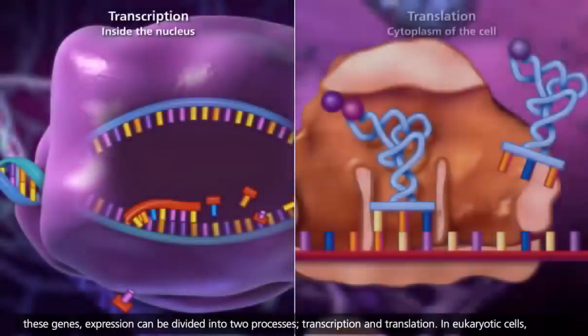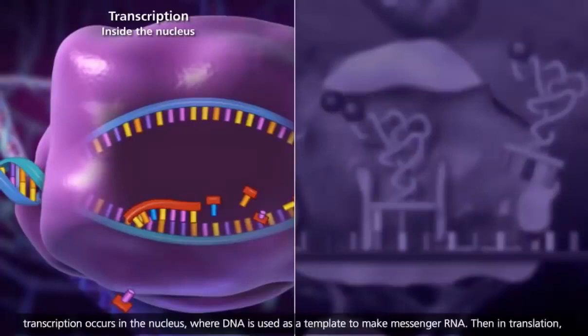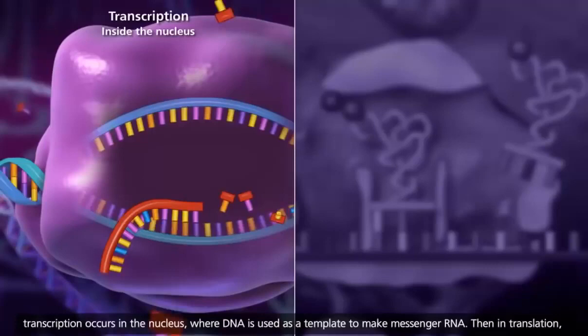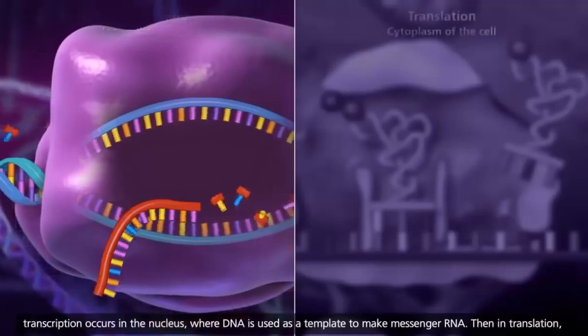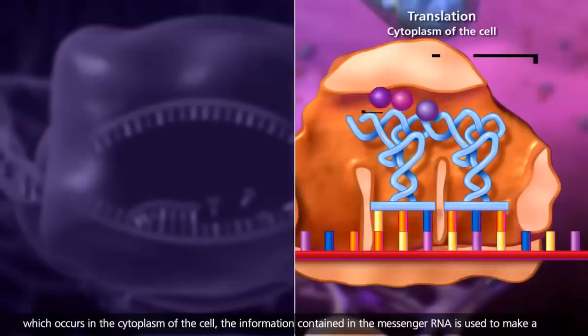transcription and translation. In eukaryotic cells, transcription occurs in the nucleus, where DNA is used as a template to make messenger RNA. Then in translation, which occurs in the cytoplasm of the cell,